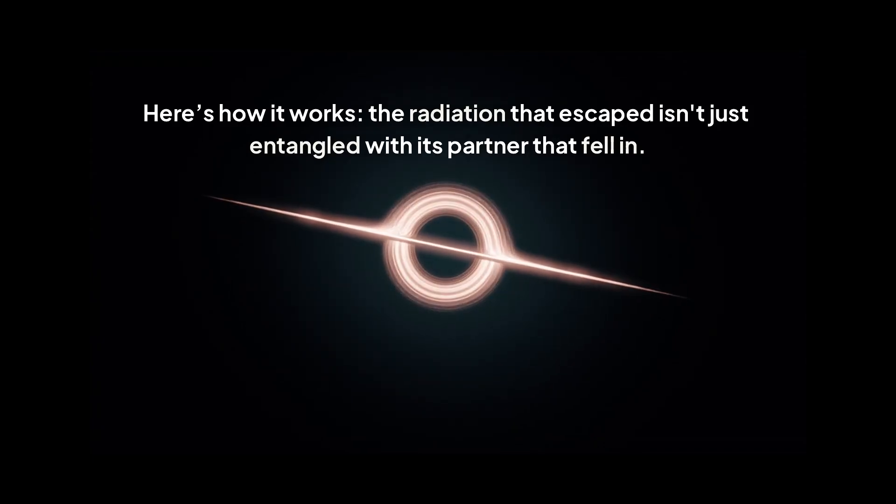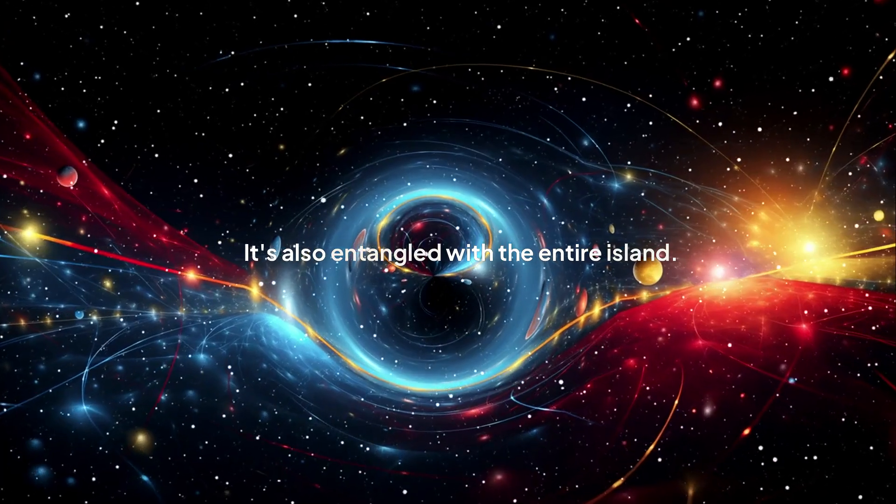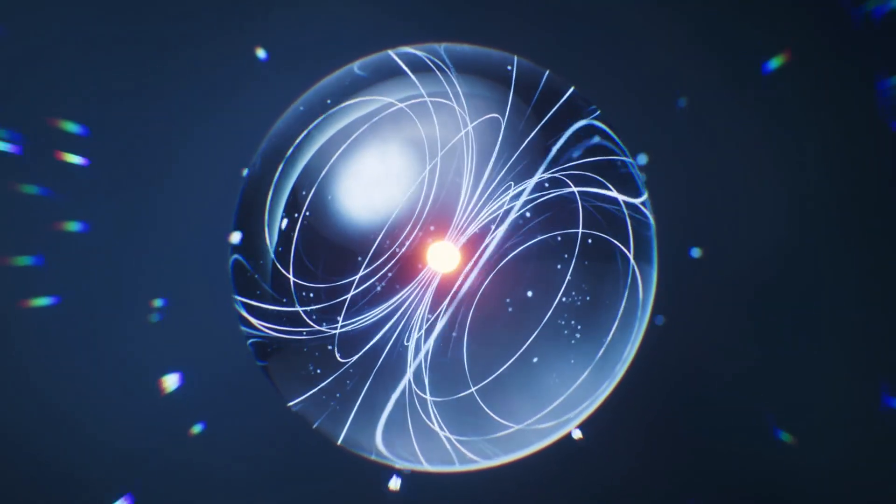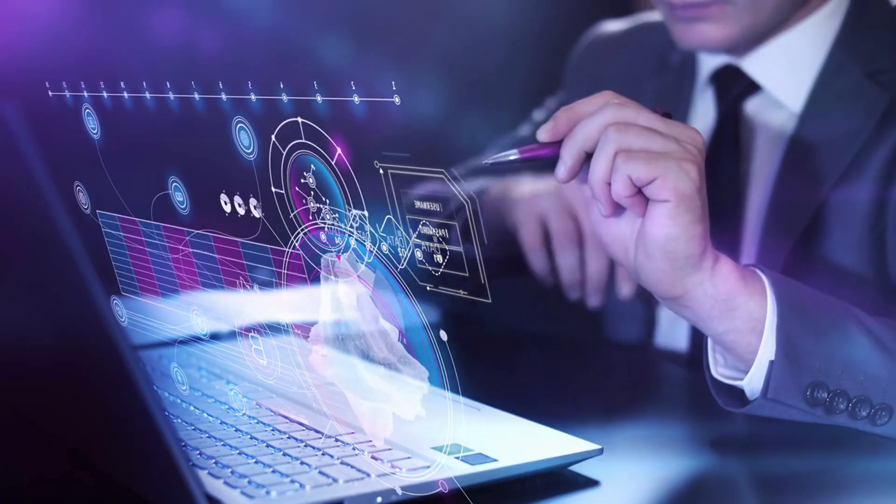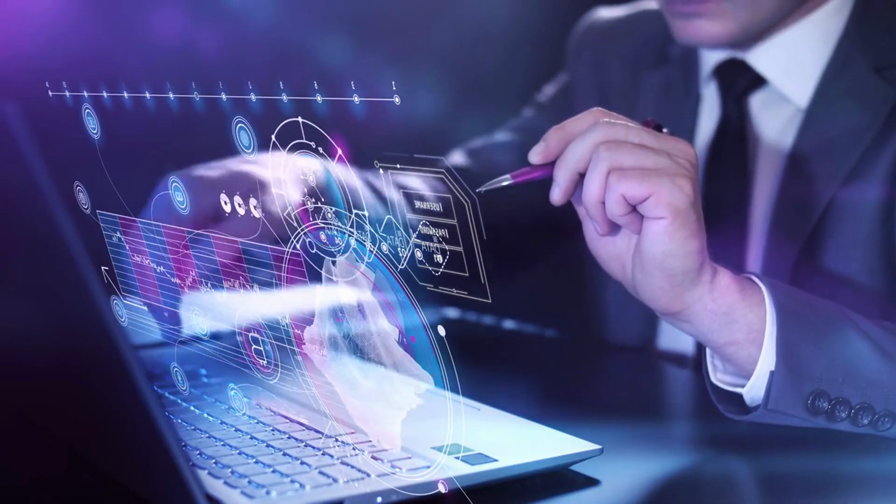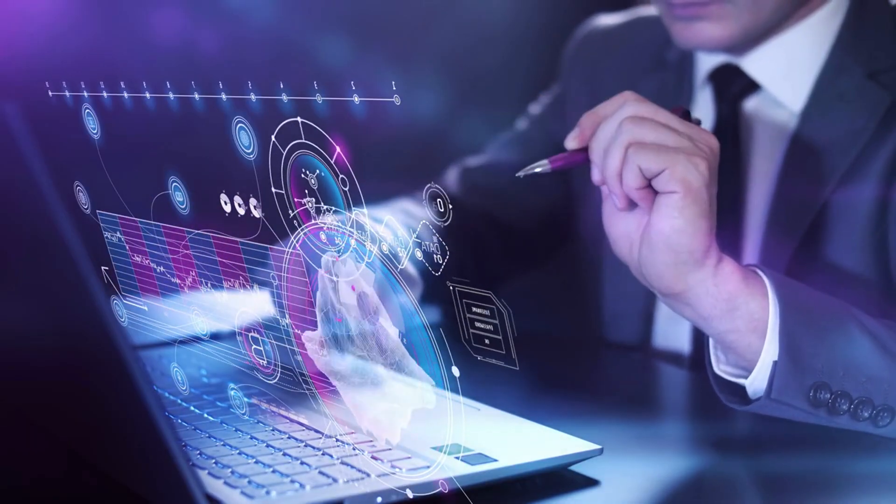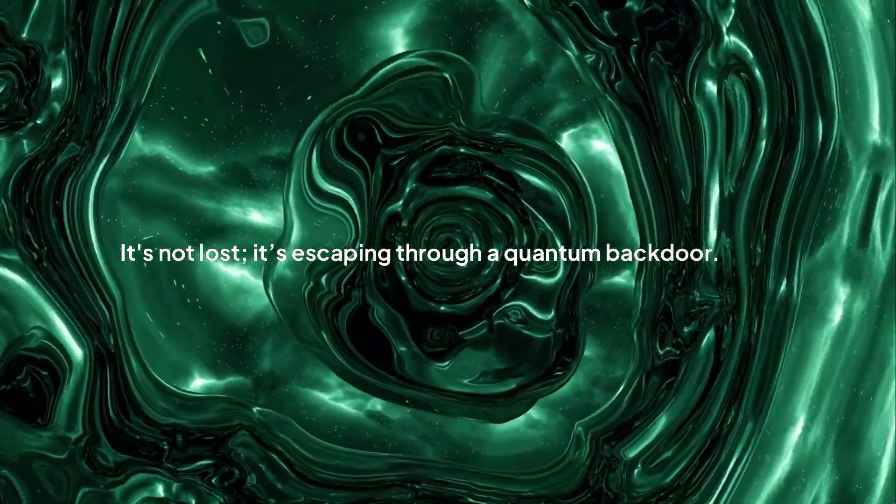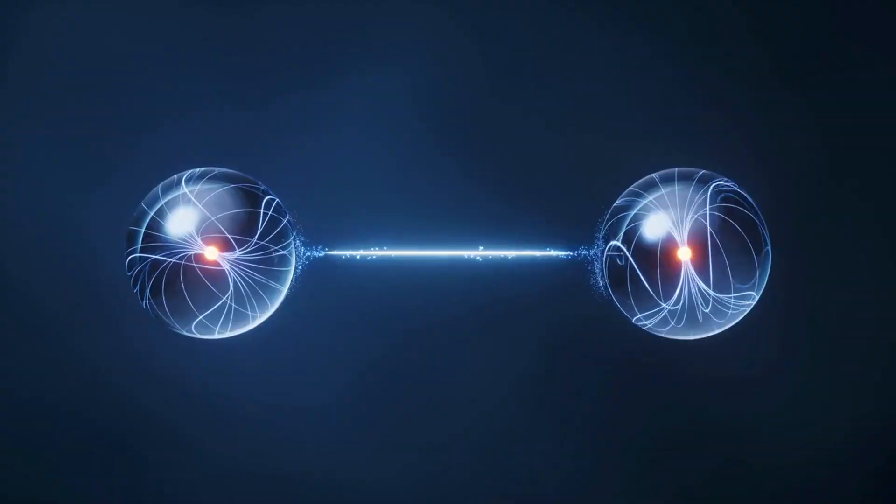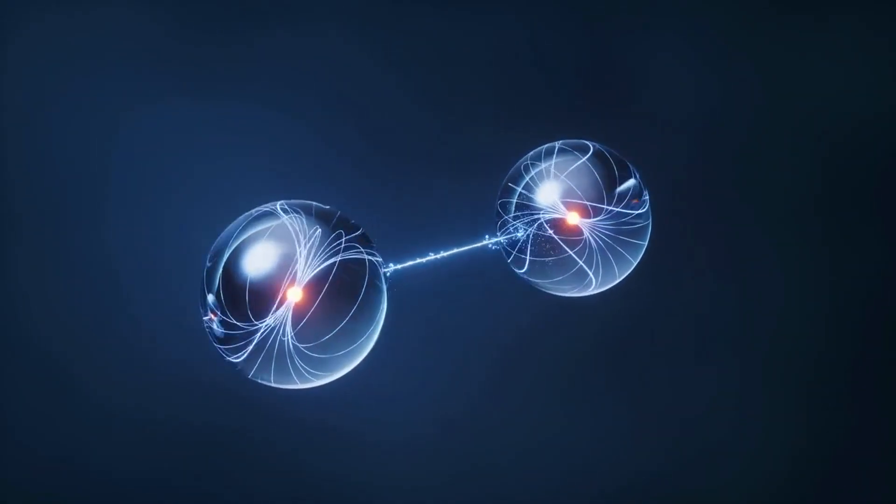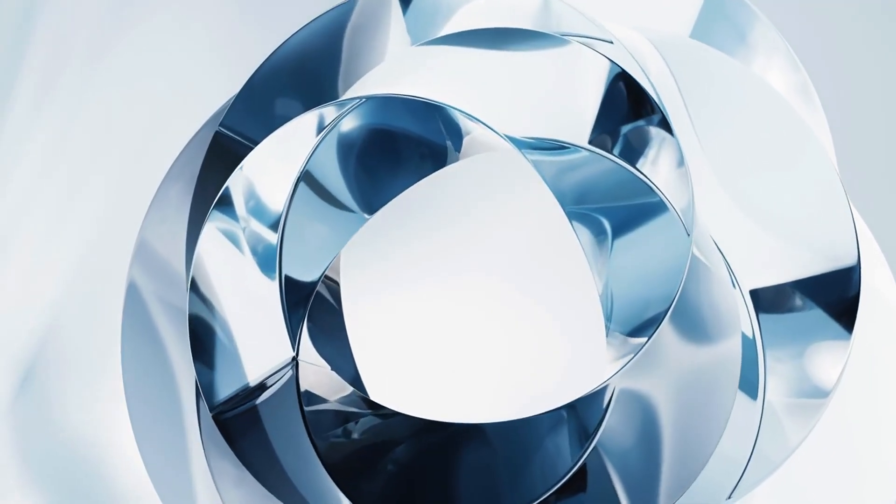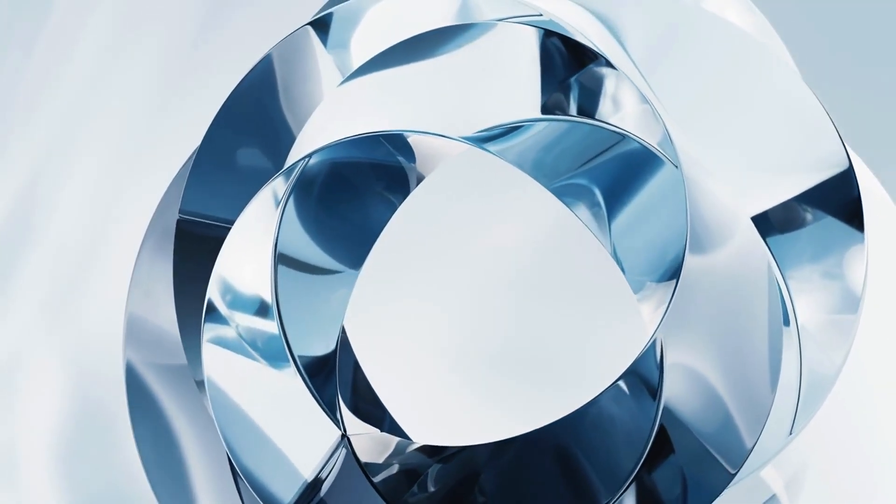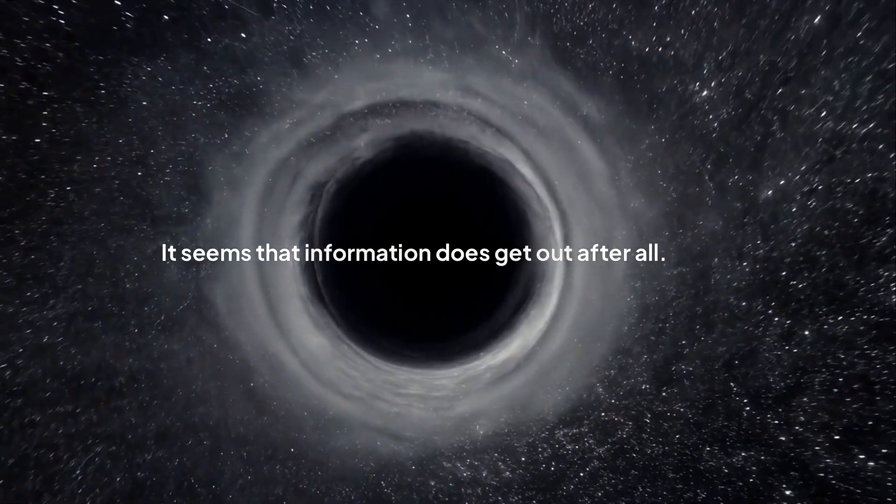Here's how it works. The radiation that escaped isn't just entangled with its partner that fell in. It's also entangled with the entire island. This island is like a quantum bridge. The information for everything that ever fell in is stored on the island. And through its entanglement with the escaping radiation, that information gets holographically passed out of the black hole. It's not lost. It's escaping through a quantum back door. When physicists added the information from these entanglement islands to their calculations, they were shocked. The math worked. The page curve, the V-shape they'd been hunting for decades, appeared perfectly. It seems that information does get out after all.